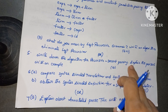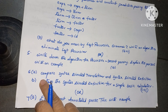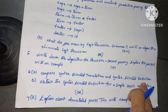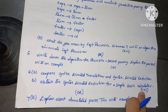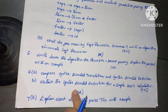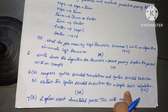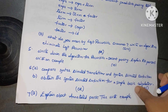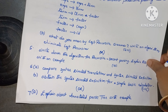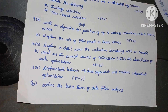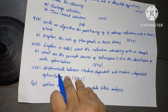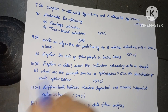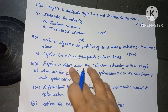Question 6A: compare syntax directed translation and syntax directed definition, 5 marks. B: obtain the syntax directed definition for a simple basic calculator, 5 marks. Or internal choice Question 7A: explain about annotated parse tree with example. B bit: compare S-attribute definitions and L-attributed definitions — 5 plus 5, 10 marks.